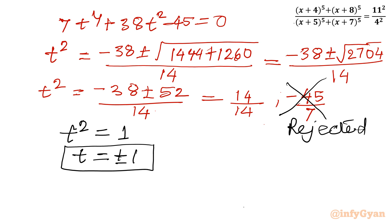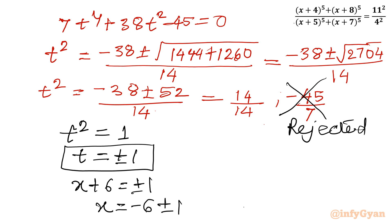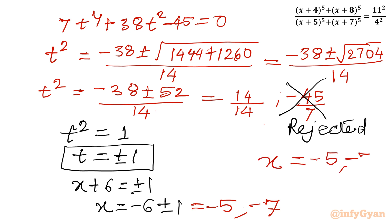These are the only possible solutions in terms of t. Since t = x + 6, we have x + 6 = ±1, so x = −6 ± 1. Taking plus gives x = −5, and taking minus gives x = −7. So there are two real solutions: x = −5 and x = −7.